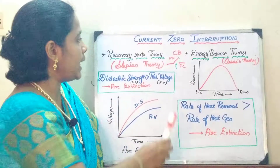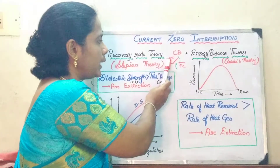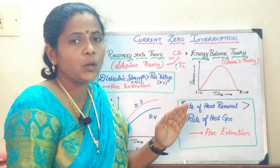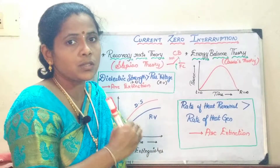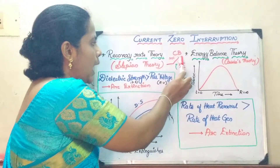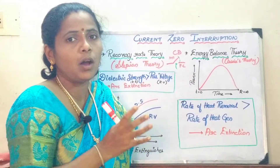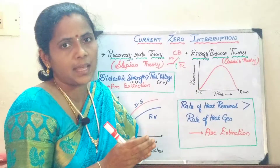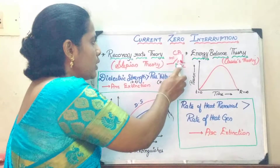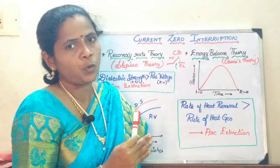When we consider a circuit breaker, it consists of a fixed contact and a moving contact. When they are moved apart in order to isolate one part of the circuit, it is not that the contact gets separated immediately. An arc is going to be formed — a combination of ionized gases between these fixed and moving contacts. This arc should be interrupted or extinguished as soon as possible.